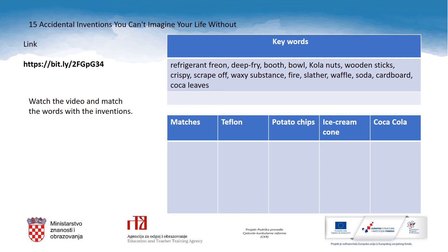Here is the list of inventions from the video '15 Accidental Inventions You Can't Imagine Your Life Without.' You will watch only the first five inventions, which is four minutes and thirty-nine seconds. But before you watch the video, try to match the words with the inventions listed in the table: matches, Teflon, potato chips, ice cream cone, and Coca-Cola. After you've done this, watch the video and check your answers.